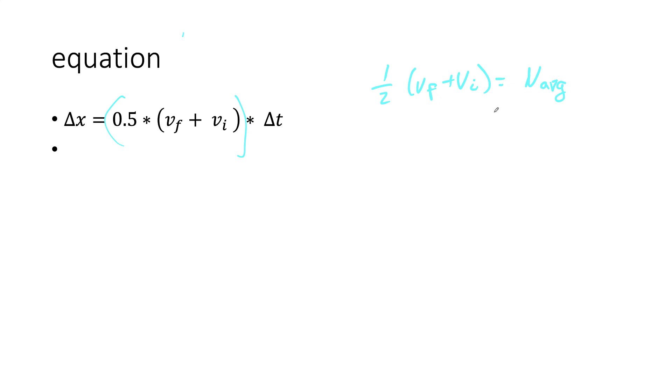This means that vi could be zero or it could be any other velocity that we have, it doesn't matter. So we take this velocity multiplied by time, we're going to get the distance the object travels, the displacement.